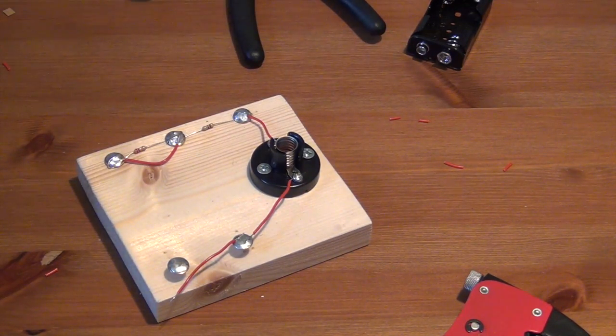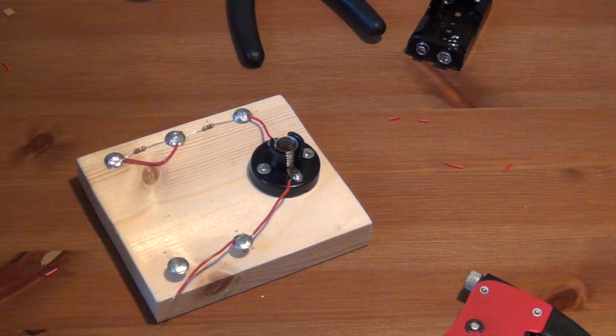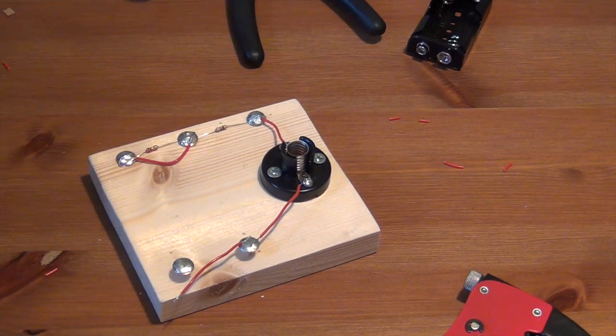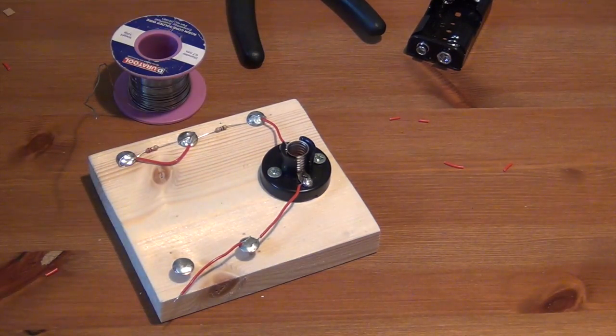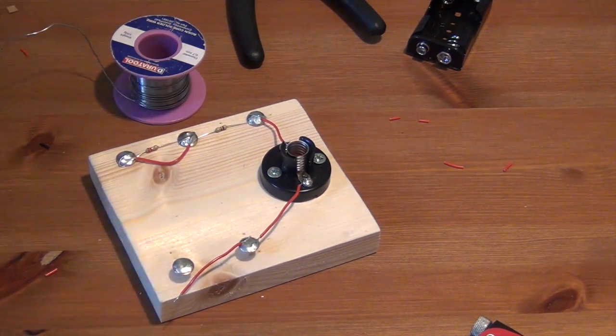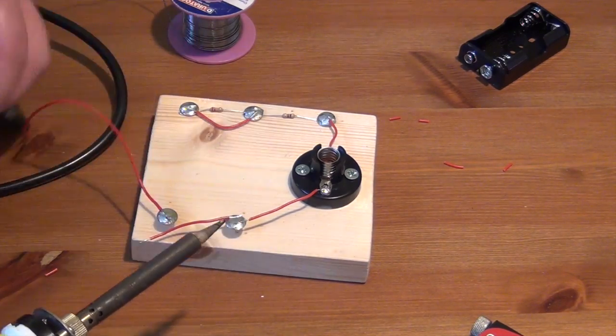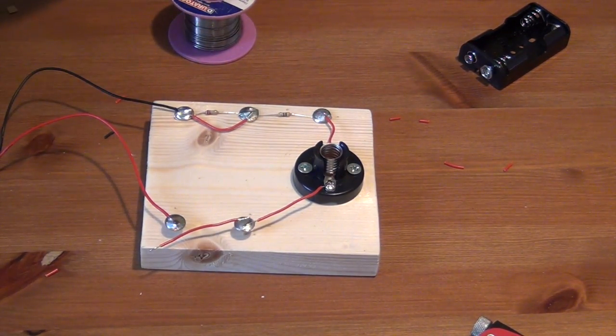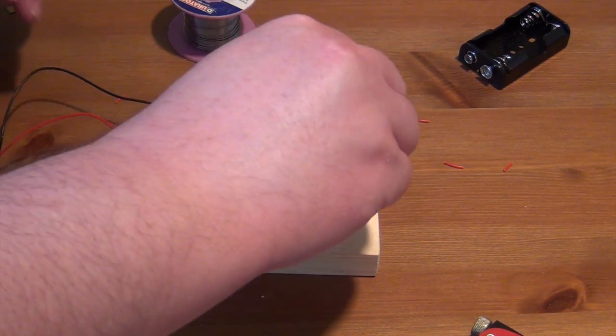And then finally the battery connector. And the red one goes on here and the black one goes on here. Perfect. So all we need to do now is put the bulb in and connect some batteries.